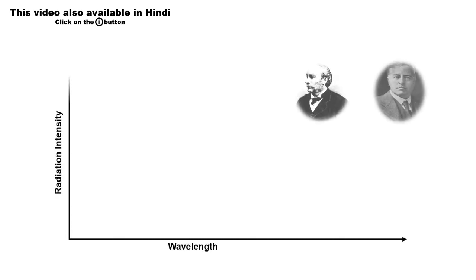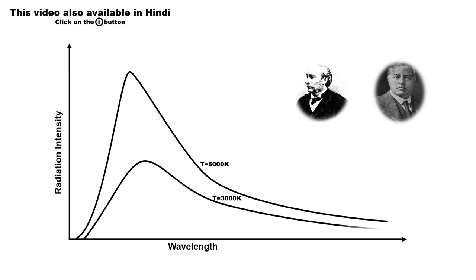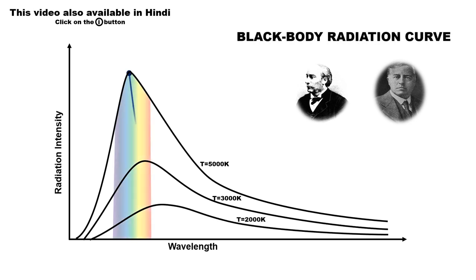Lord Rayleigh and James Jeans tried to explain the blackbody radiation curve with the help of the equipartition of energy principle of classical statistics. But unfortunately, Rayleigh-Jeans law failed to explain this curve. In this video of quantum mechanics, we will understand the complete mathematics behind this law and try to find out at which point this law failed.